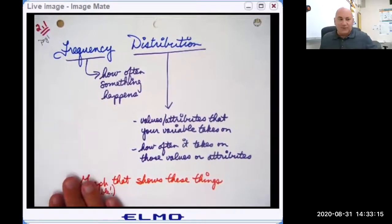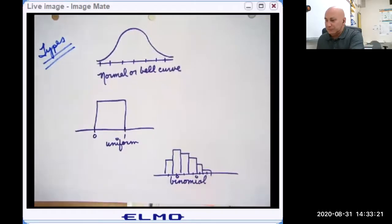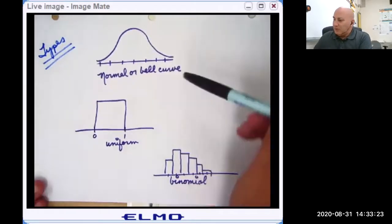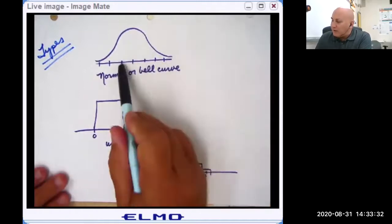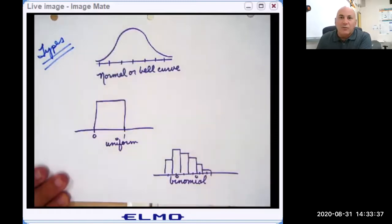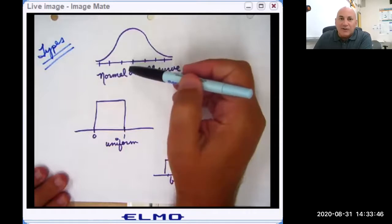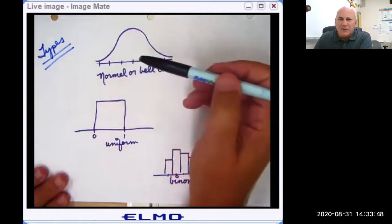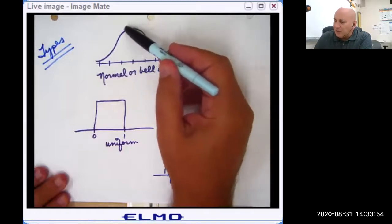There are a number of types of frequency distributions that we will encounter over the course of this school year. Here, this is the normal curve. Outside of statistics, people know this as the bell curve. These are your values that your data takes on, and the height of the curve tells you how often it takes on those values. If we're measuring the average height of the adult American woman, I think that's around 5'3 or 5'4, that would be right here.